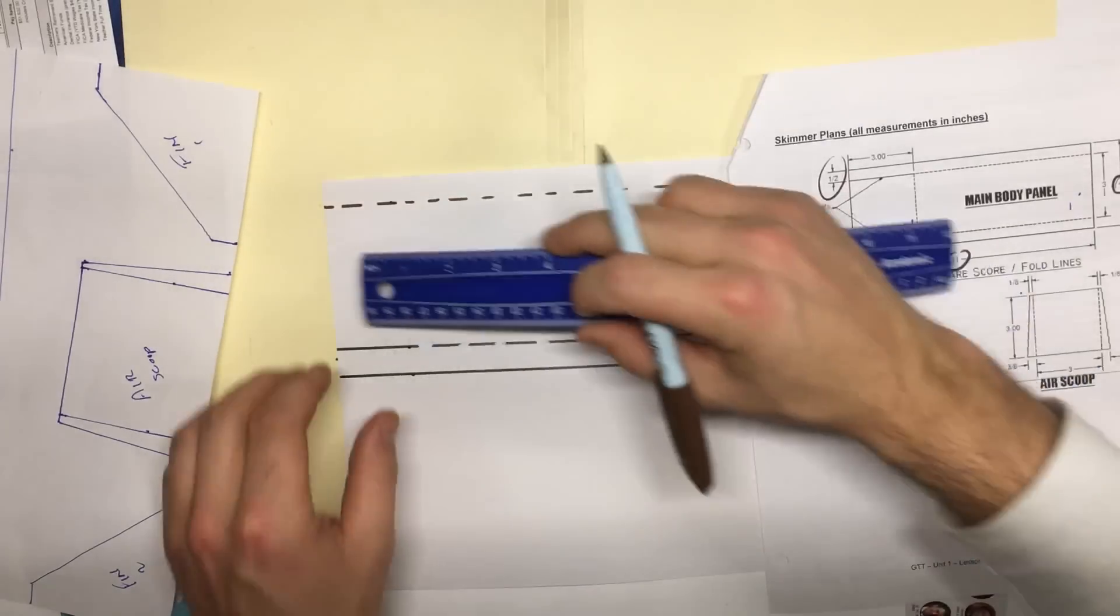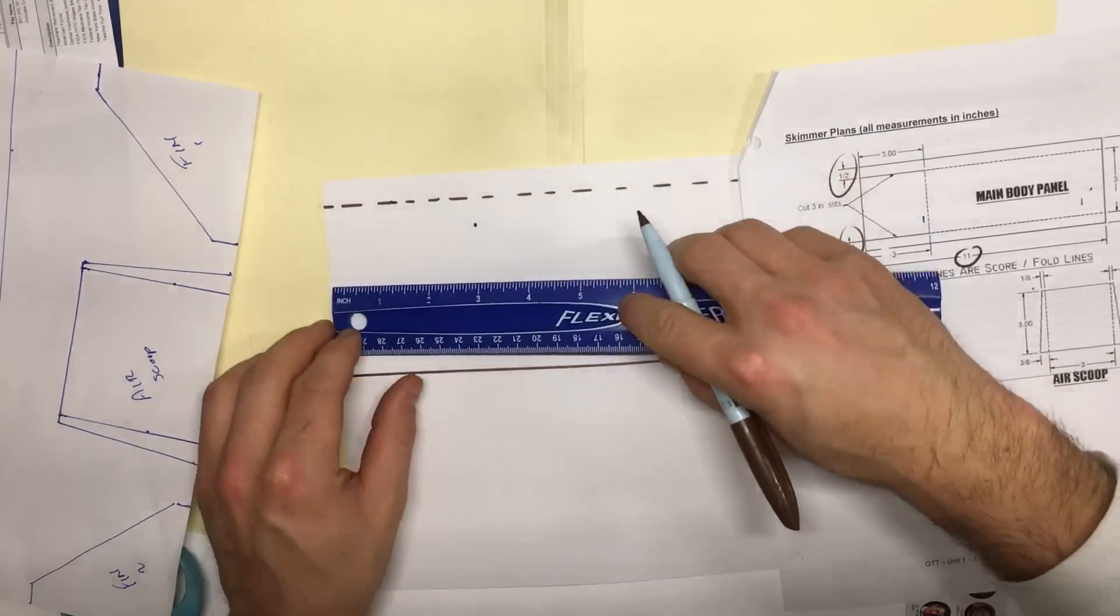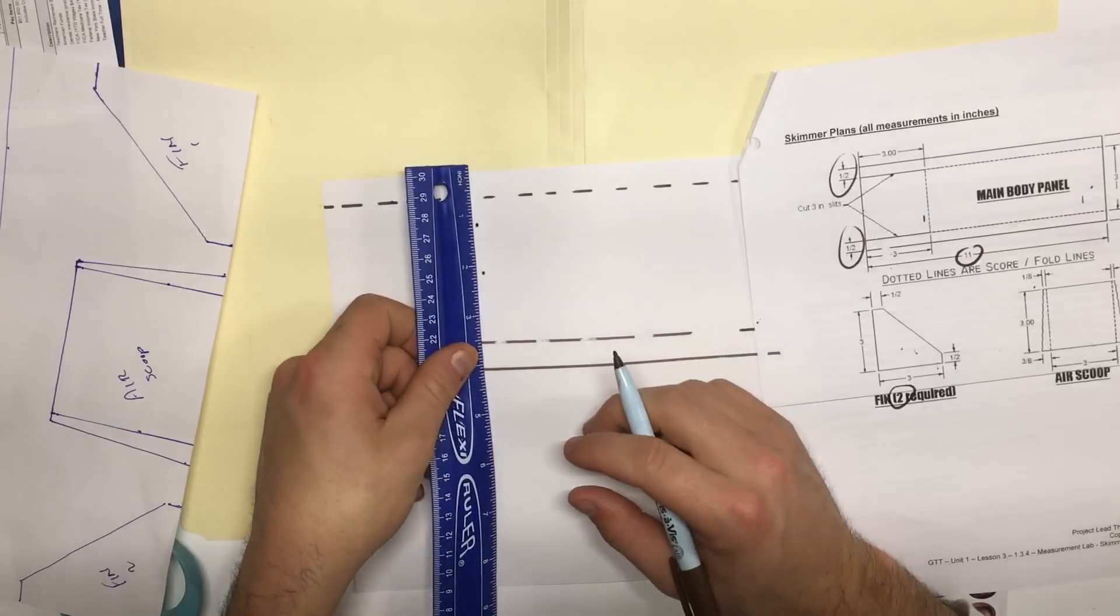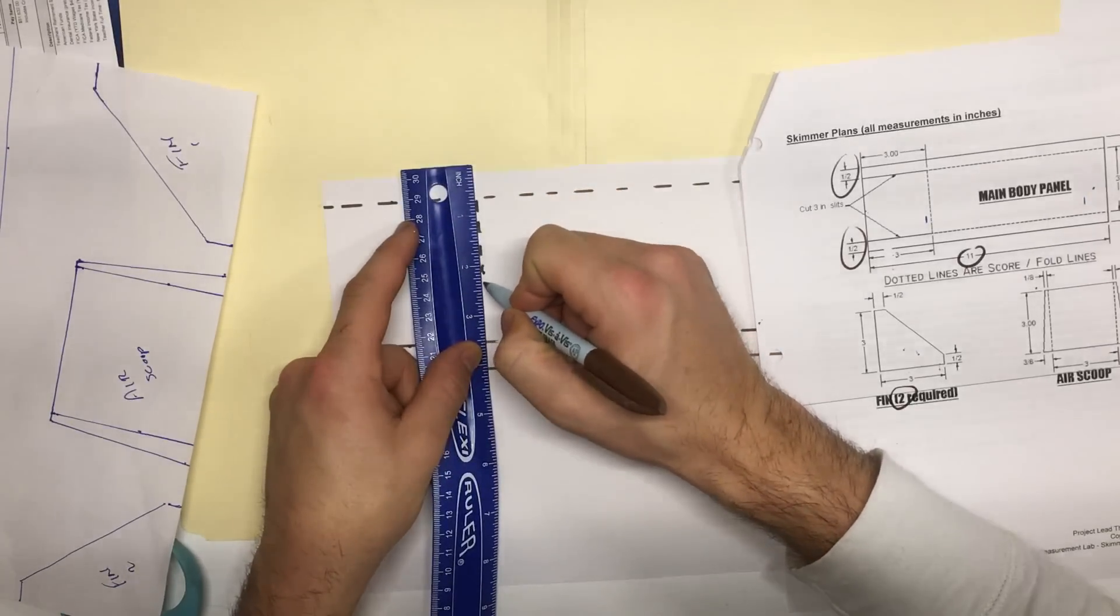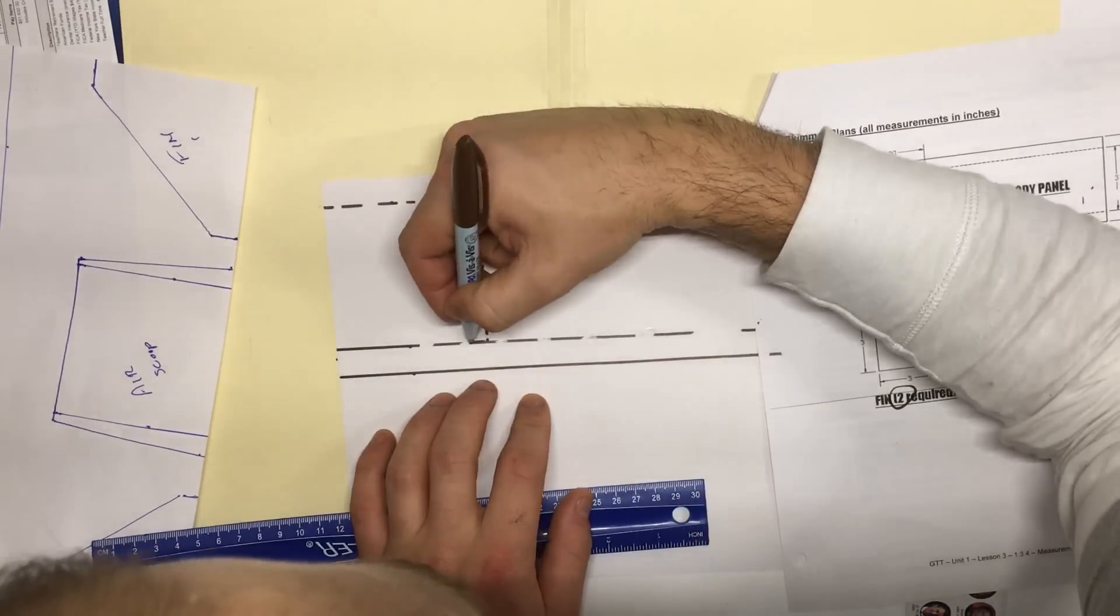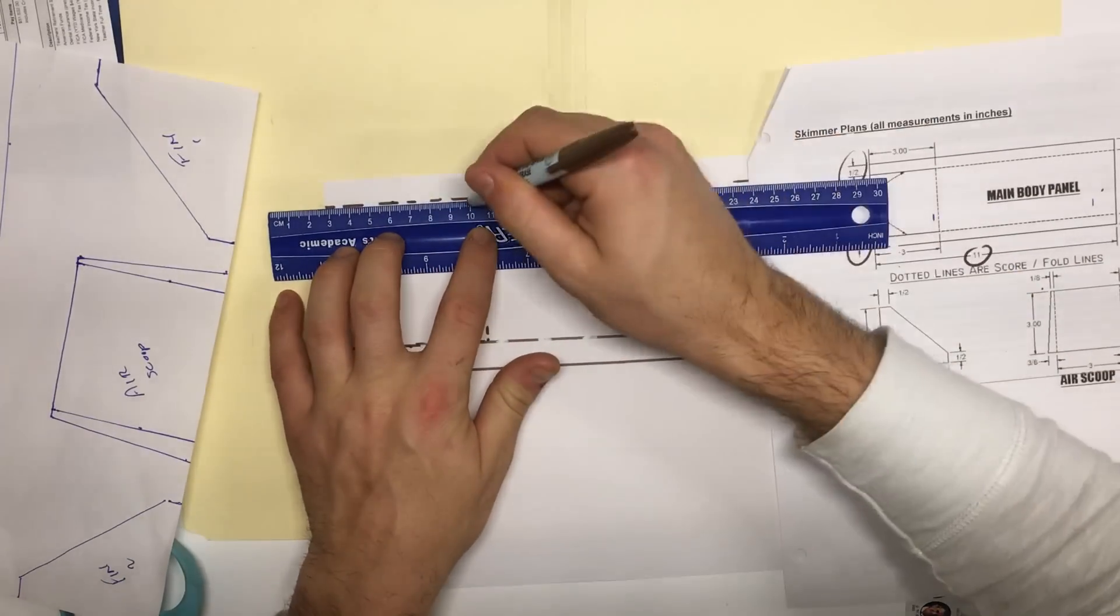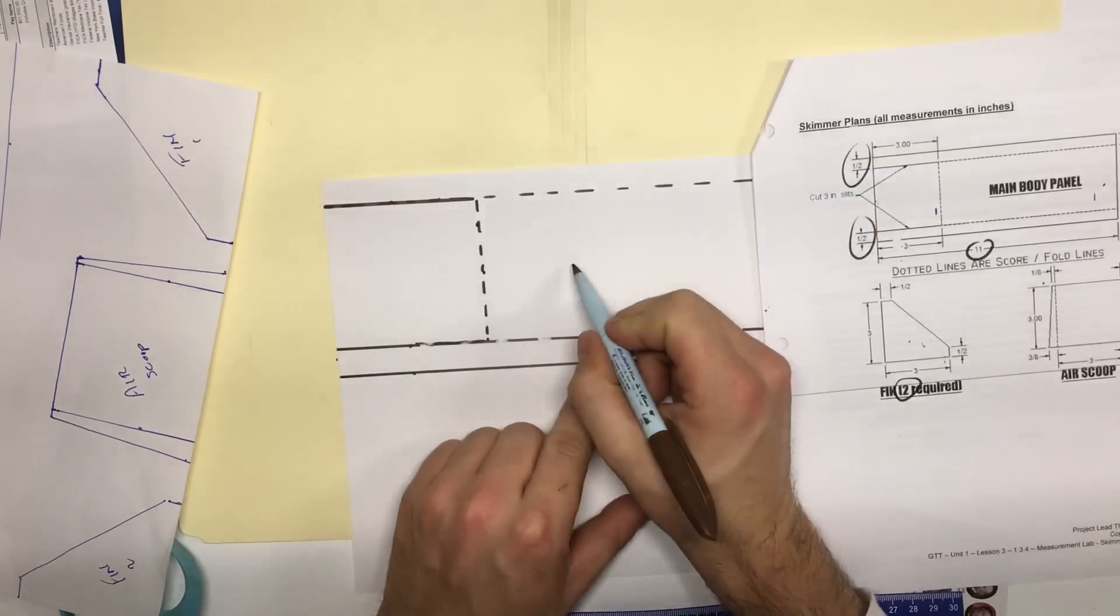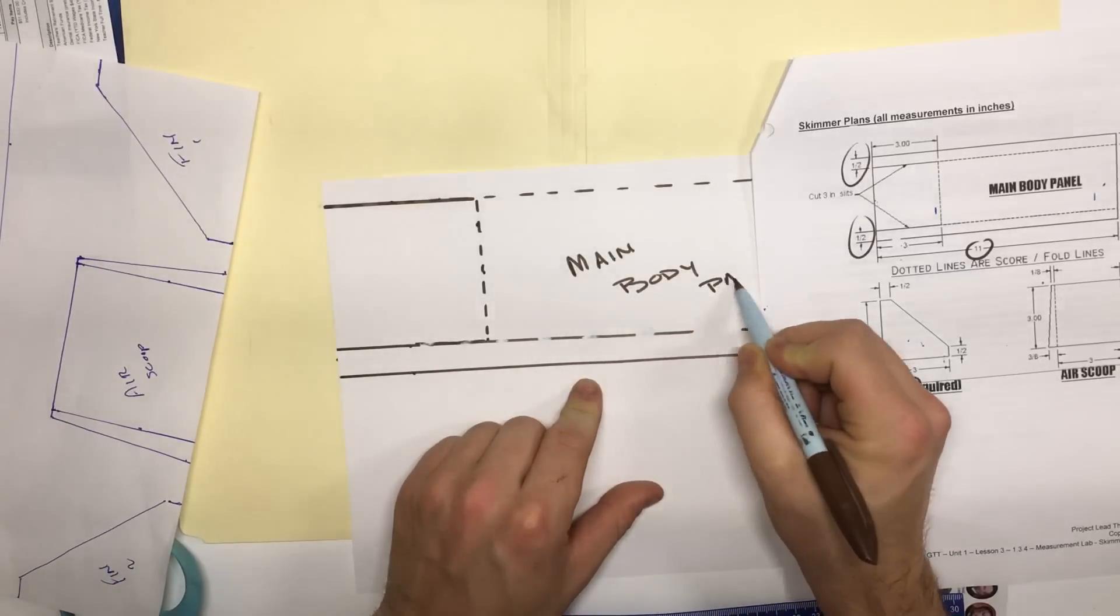I'm going to choose this end right here to be my end. And once again, you'll notice that I make two measurements. That is so important for ensuring that I have a straight line. Once again, I should pay special attention to the fact that this is going to be a dotted line. And after it, it's going to be a solid line. I hope that it doesn't ruin my marker. It probably will. That's going to be important when I go to assemble. And I can label this now, main body panel.